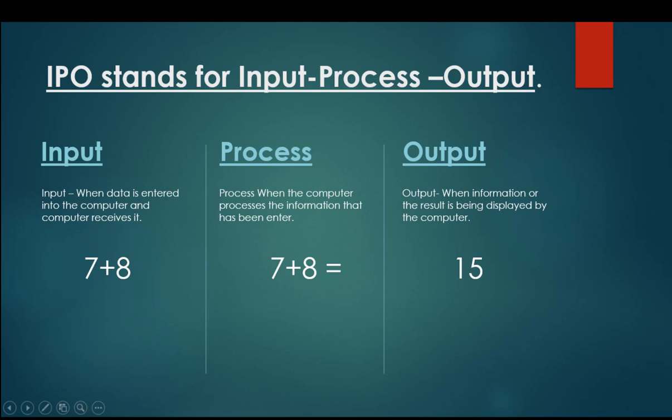Now process. Process. When the computer processes the information that has been entered. We have entered 7 plus 8. Now processing is going on. Next is output. Output. When information or the result is being displayed by the computer as now calculation is done and answer is 15.